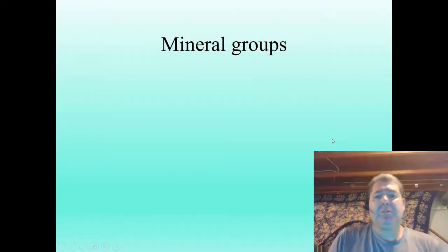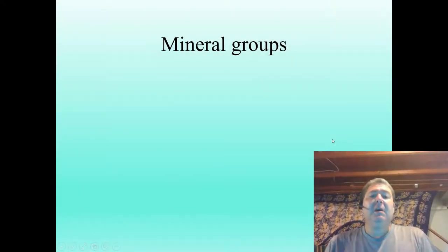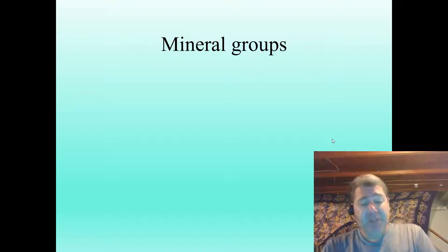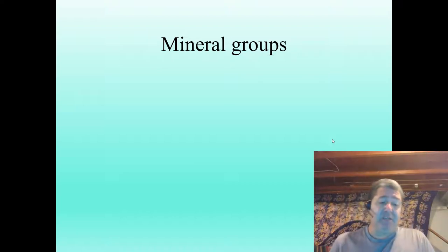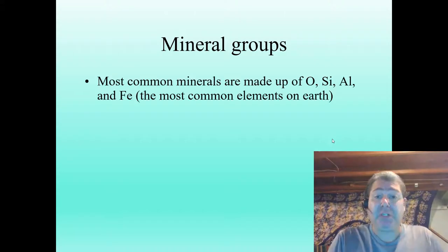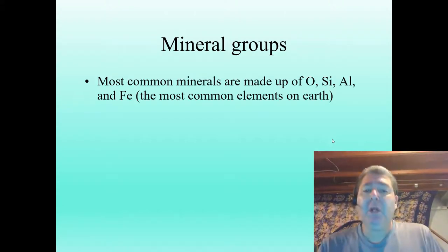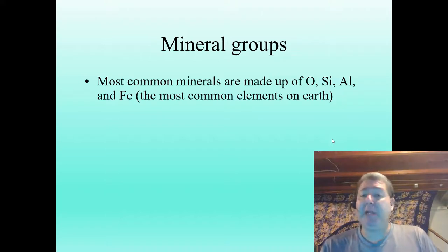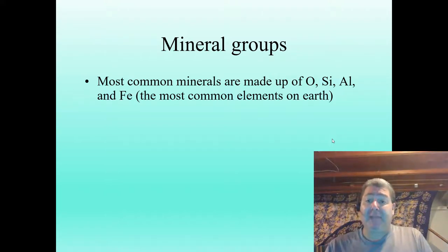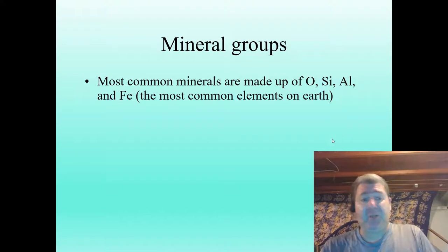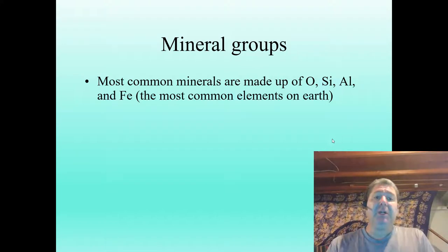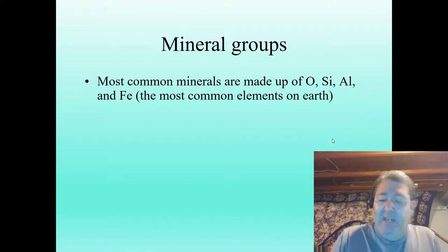Let's discuss the different groups of minerals, starting with the silicate minerals. First, let's look at some of the major groups of minerals. The most common minerals are made up of the most common elements of Earth — oxygen and silicon being the two highest, along with aluminum, iron, potassium, and magnesium.